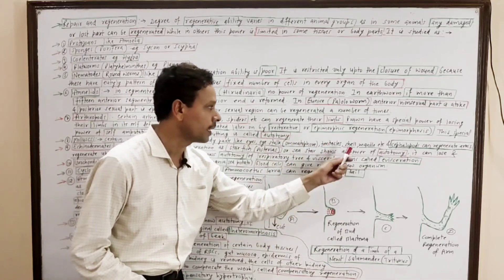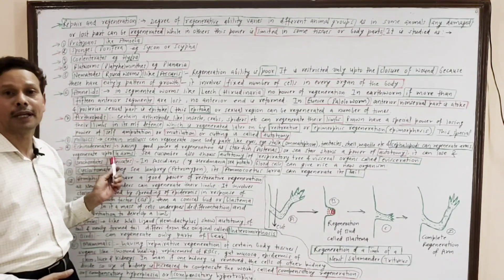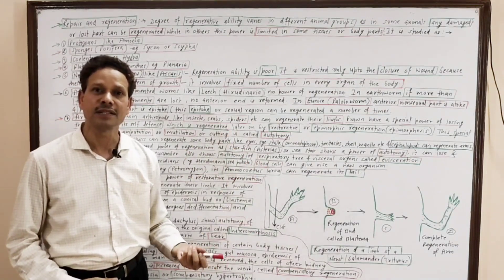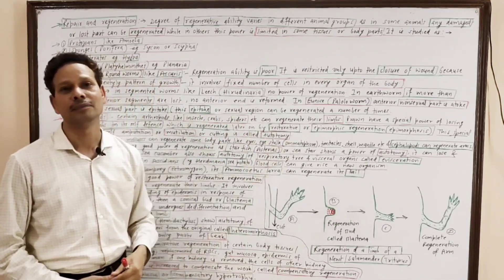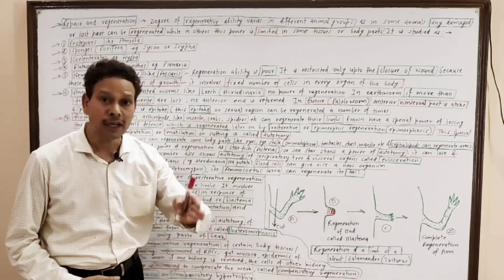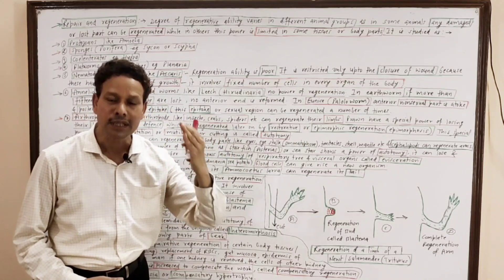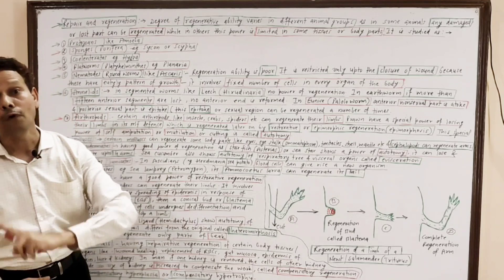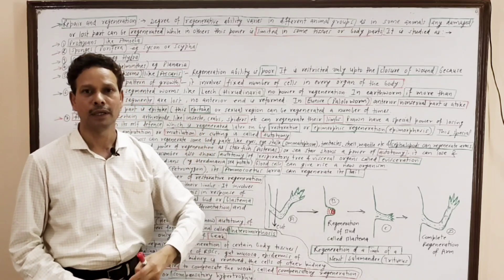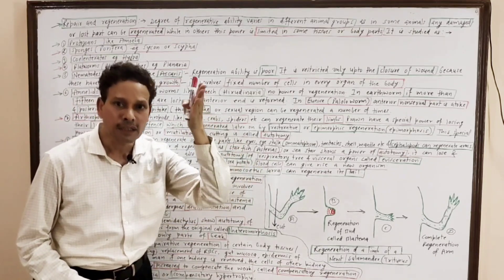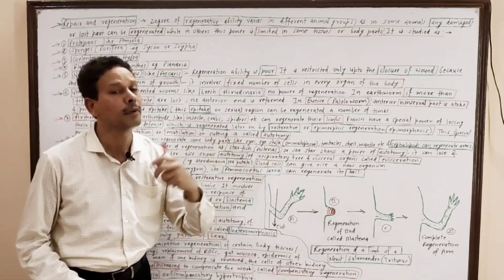In echinoderms like starfish (Asterias), they can regenerate their lost arms. The starfish can regenerate its limbs — its arms — up to four. The starfish also shows the power of autotomy for self-defense, cutting its arm, which can later be regenerated.